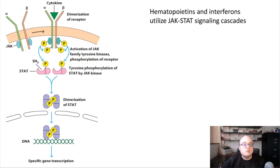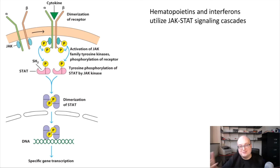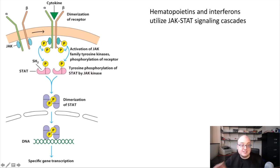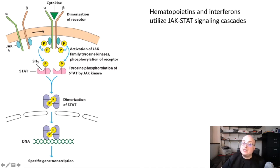We'll start with hematopoietin cytokines. I want to remind you that both hematopoietins and interferons have a common signaling mechanism, which we talked about last time: signaling through a JAK-STAT signaling cascade. For both hematopoietins and interferons, recall that they have multiple subunit receptors, usually dimers. And when the cytokine binds, the dimerized receptor comes together, which brings receptor-associated kinases called JAKs into proximity.